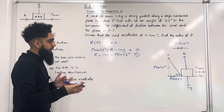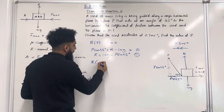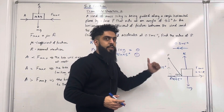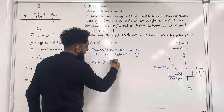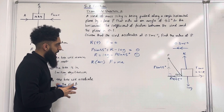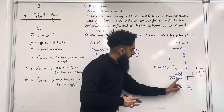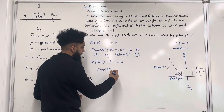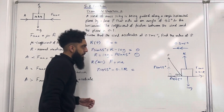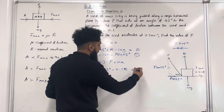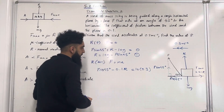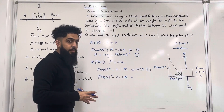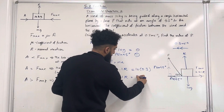To generate equation 2, I resolve horizontally, taking left — the direction of acceleration — as the positive direction. Using Newton's second law, F equals ma: P cos 45 degrees minus 0.1R equals 10 multiplied by 0.3, which is 3. That is equation 2.